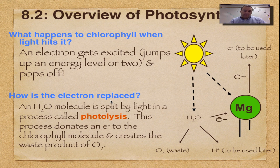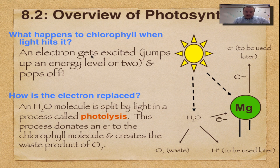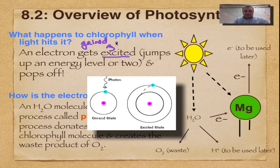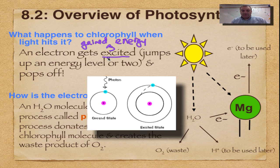When light hits chlorophyll, that magnesium atom — it's a type of metal — metals like to get rid of their electrons easily. So when light hits this magnesium, an electron is going to pop right off. When an electron gets full of energy, we say that it gets excited, meaning it has gained energy. The energy from light is transferred to an electron, and that electron is going to be used later in photosynthesis.